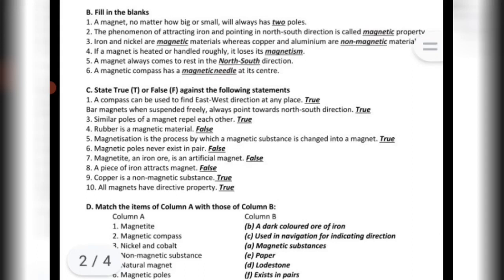If a magnet is heated or handled roughly, it loses its magnetism. A magnet always comes to rest in the north-south direction. A magnetic compass has a magnetic needle at its center.